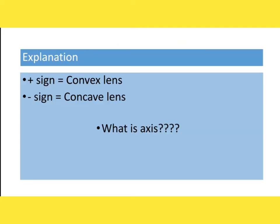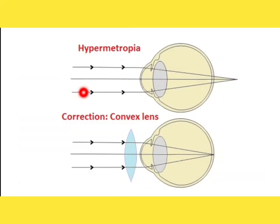Convex lenses are used to treat hypermetropia, concave lenses are used to treat myopia, and cylindrical lenses are used to treat astigmatism. Convex lenses are also used to treat presbyopia. In hypermetropia, parallel rays of light coming from infinity get focused behind the retina. When you put a convex or plus lens in front of the eye, the focus moves forward, and with the proper power lens, the focus lands on the retina at the fovea so that you can see clearly.